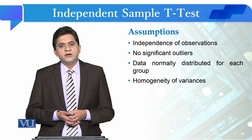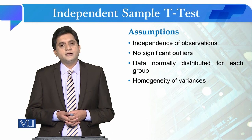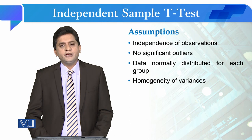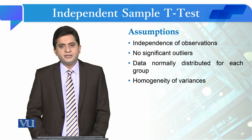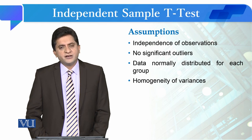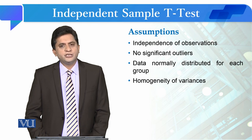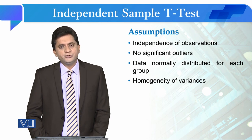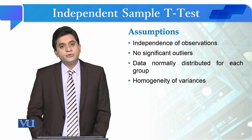Before performing this test, you also need to check for each group category that there are no outliers in the dependent variable. For example, if you want to see the effect of gender on GPA, you check the GPA distribution with reference to males and with reference to females — that both distributions are normally distributed and contain no outliers.